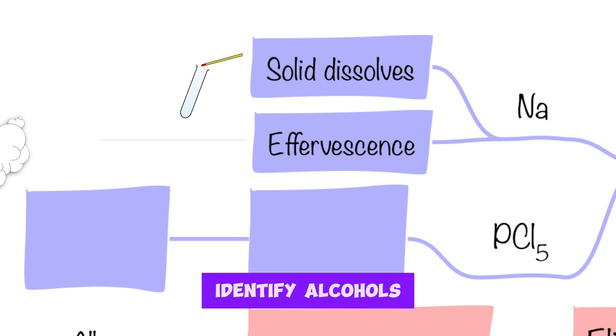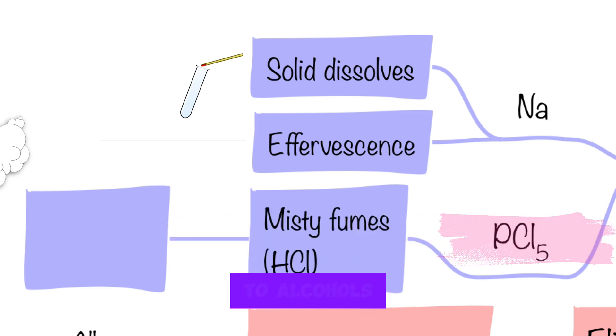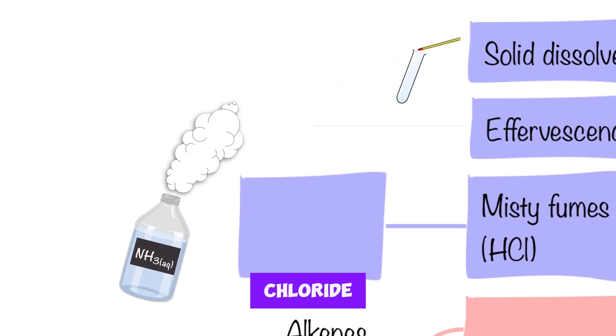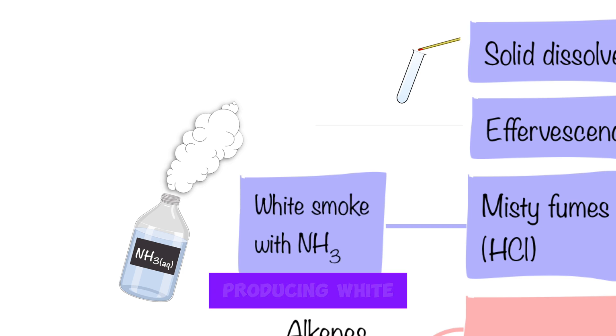The second way to identify alcohols is by using PCL5. When you add PCL5 to alcohols they'll be producing misty fumes of hydrogen chloride. You can test the hydrogen chloride by using ammonia, producing white smoke of ammonium chloride.